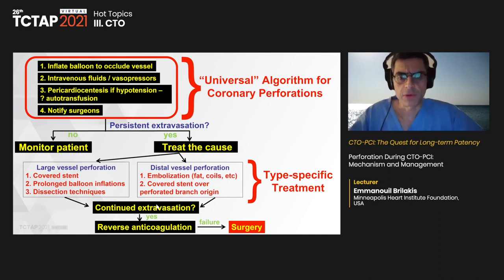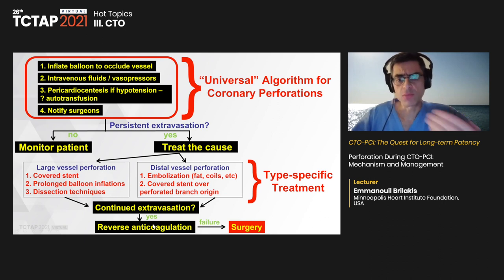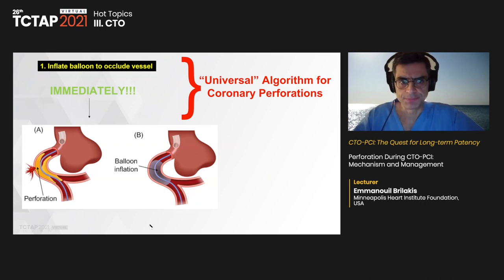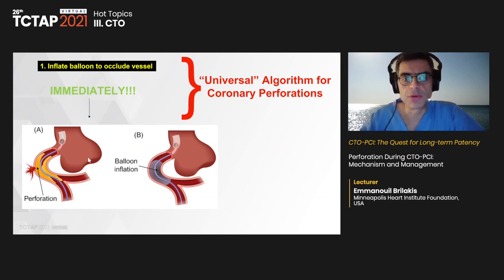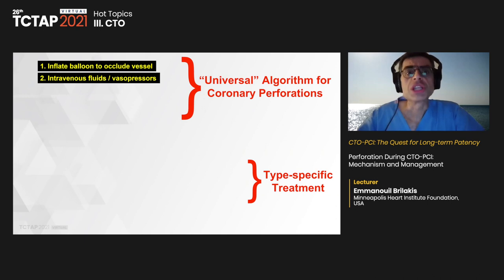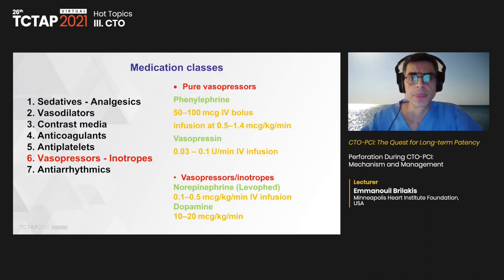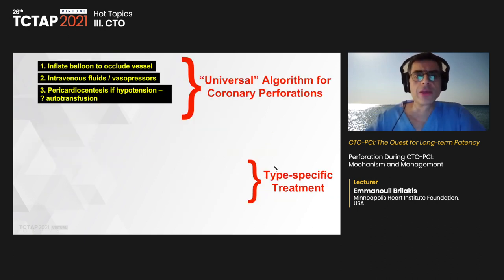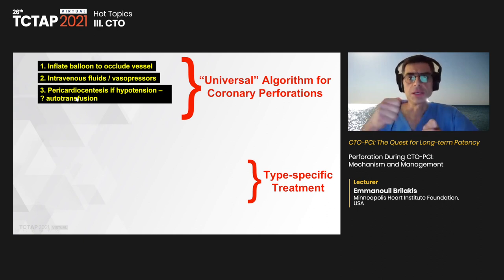Norepinephrine is the most common vasopressor for shock or tamponade. If hypotension occurs, pericardiocentesis may be needed. Blood removed can be given through a peripheral vein to minimize blood loss. Pulsus paradoxus — significant reduction in systolic pressure with inspiration — is a characteristic feature of tamponade. Pericardiocentesis is ideally done with ultrasound guidance, but if time is short, fluoroscopy can serve as a guide since contrast in the pericardial space provides a target for the needle and guide wire.